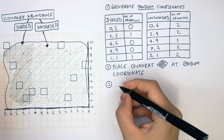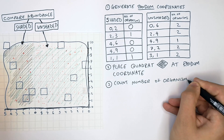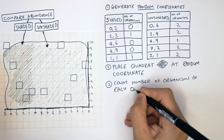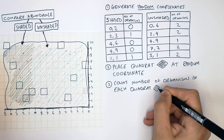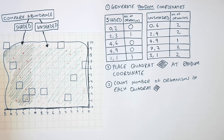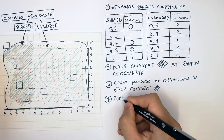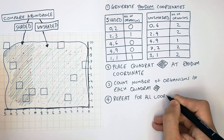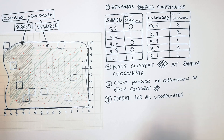We have counted the number of organisms in each quadrat. You repeat this process for all of the coordinates — we did 5 for each shaded or unshaded region. The more coordinates you use, the more reliable your results.